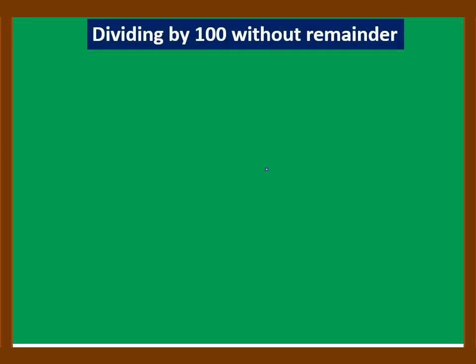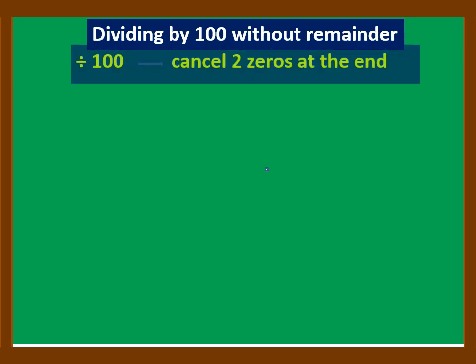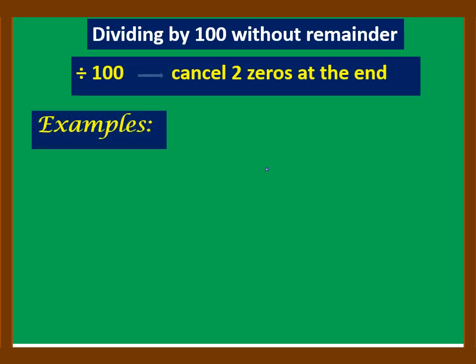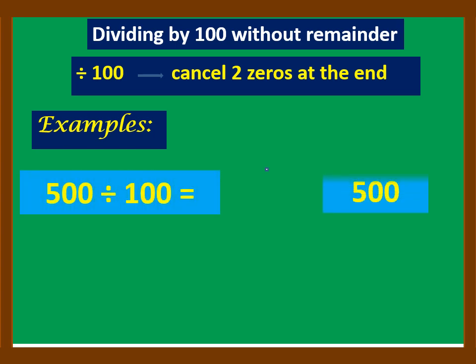In dividing by 100 without remainder, we simply rewrite the number and cancel or remove two zeros at the end. Example: 500 divided by 100 — rewrite 500 and cancel two zeros, so the answer is 5.